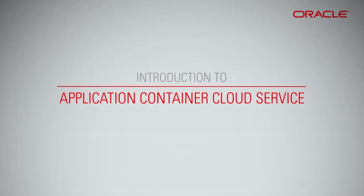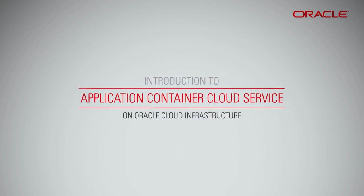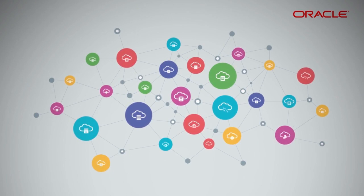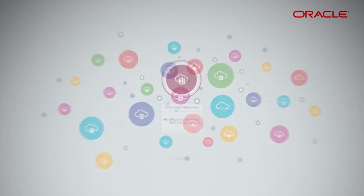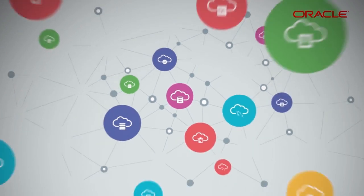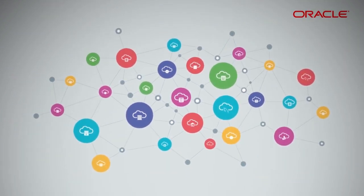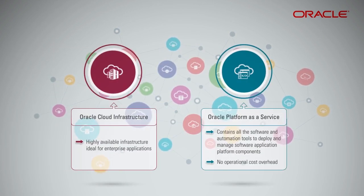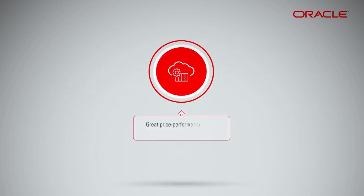Introduction to Application Container Cloud Service on Oracle Cloud Infrastructure. Oracle Cloud Infrastructure's enhanced regions offer highly available infrastructure ideal for enterprise applications. Oracle Platform as a Service offerings contain all the software and automation tools you need to deploy and manage software application platform components without the operational cost overhead. This adds up to great price performance for the Application Container Cloud Service.